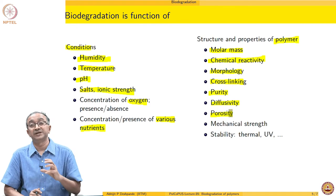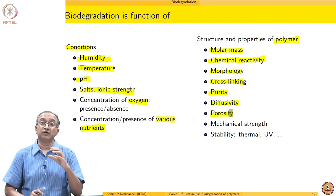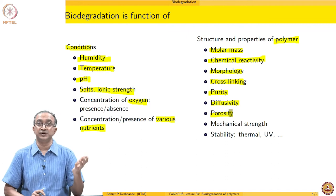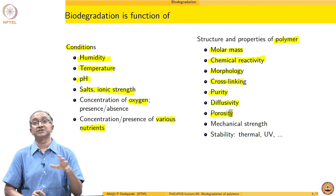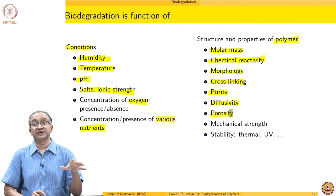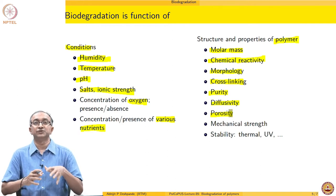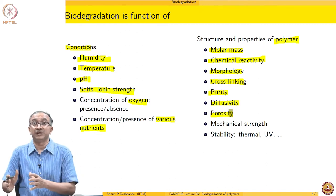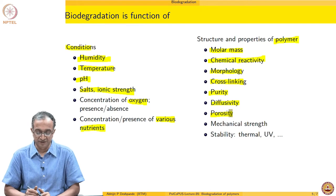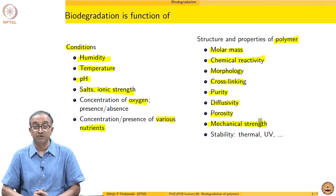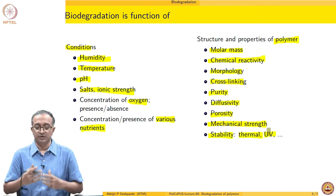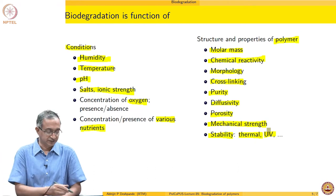Diffusion and porosity are also very important because smaller molecules have to move in and out either as reactants and products. Water has to go in, oxygen has to go in, and similarly monomers and oligomers have to move around so that microorganisms can assimilate them. Generally, diffusion and porosity of these polymeric materials as they are biodegrading influences their biodegradation behavior. The overall mechanical strength and stability in terms of thermal and UV also plays an important role in determining the biodegradation rate.